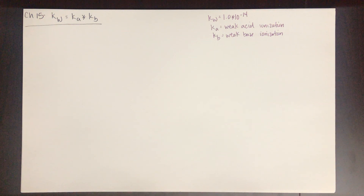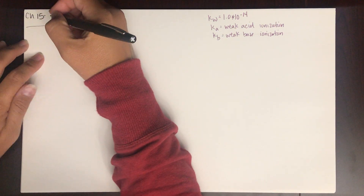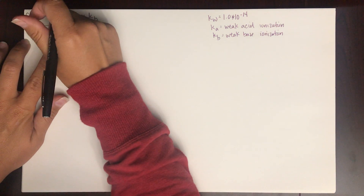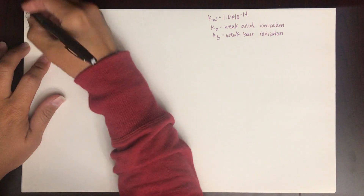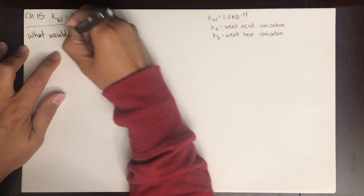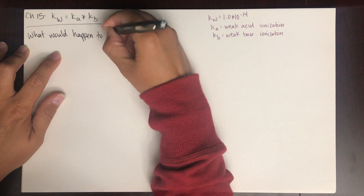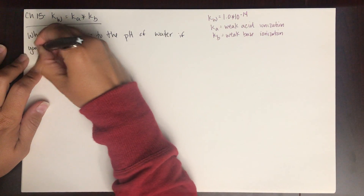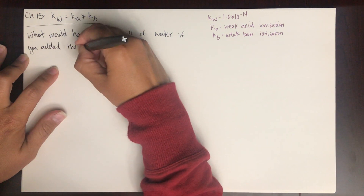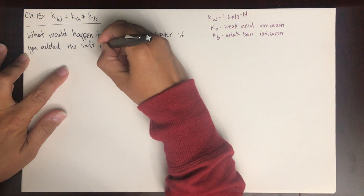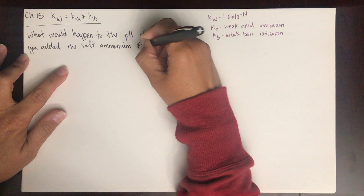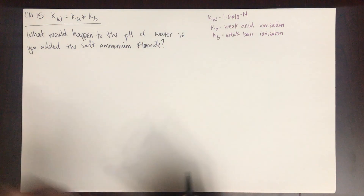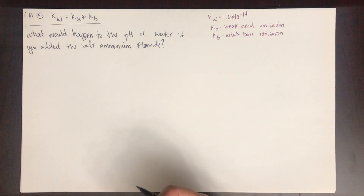Let's look at some examples of this, illustrated by trying to determine if a salt is acidic, basic, or neutral. If you had a problem that read: what would happen to the pH if you added the salt ammonium fluoride? Would the pH increase, decrease, or stay the same? That's the answer we're looking for.